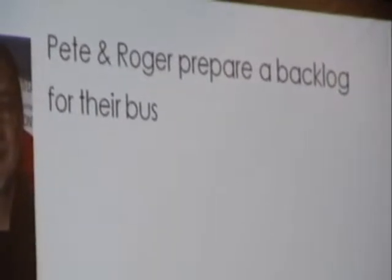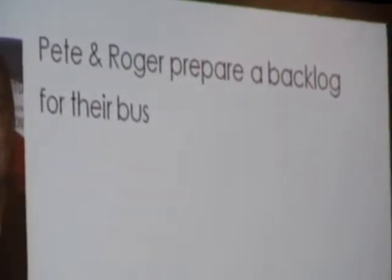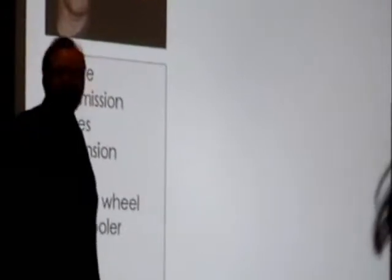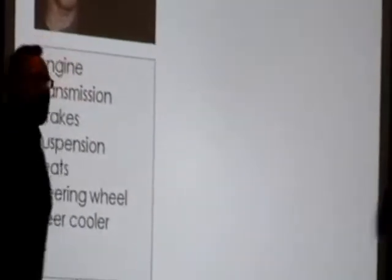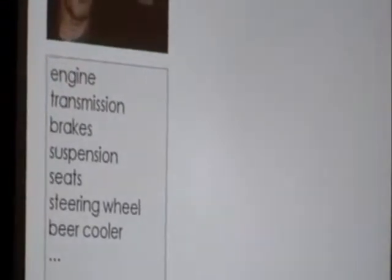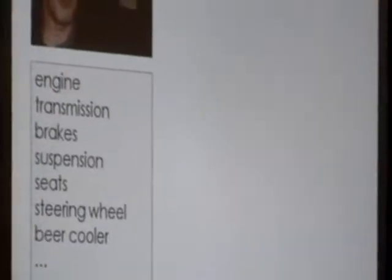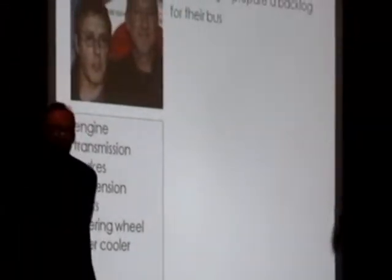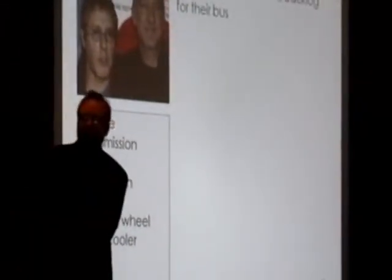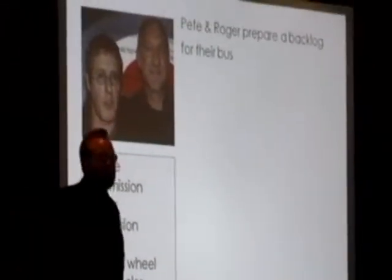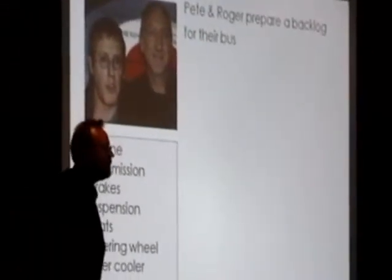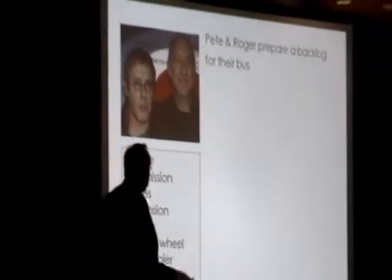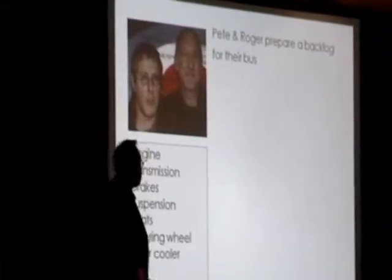Their backlog has some simple things like engine, transmission, brakes, suspension, seats, steering wheel, and beer cooler. And if you're Pete and Roger, you know that all of these things are equally important. You couldn't possibly ship a bus without an engine, transmission, and beer cooler. It has to have all of these features.